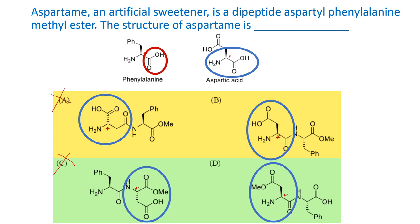In structure D, the amide bond is correctly with the alpha carbonyl group, but the beta carboxylic acid group has been converted into a methyl ester. However, it is phenylalanine that should be converted into a methyl ester, not aspartic acid. So option D is also wrong. Therefore, option B must be the correct answer.